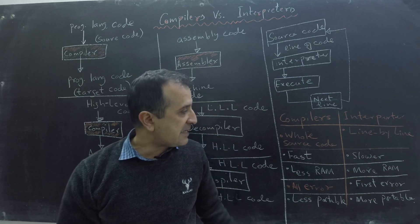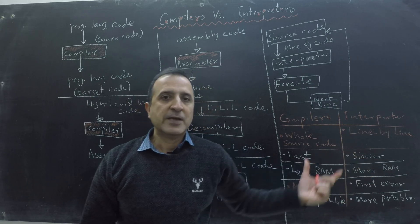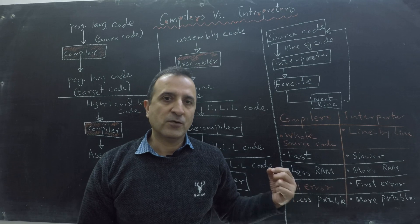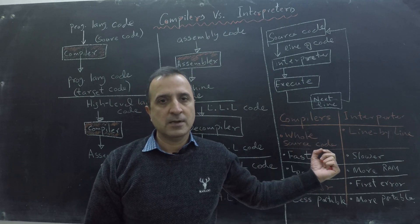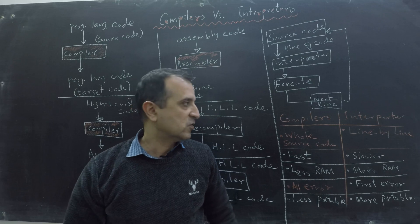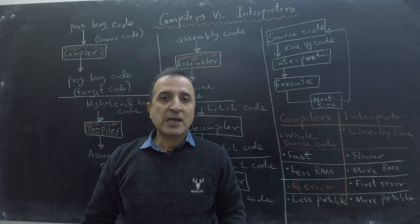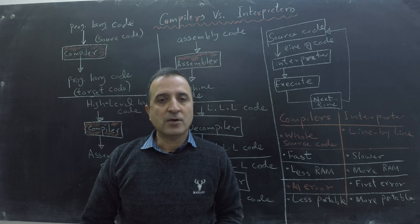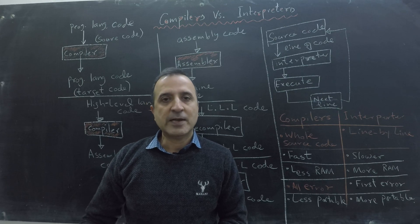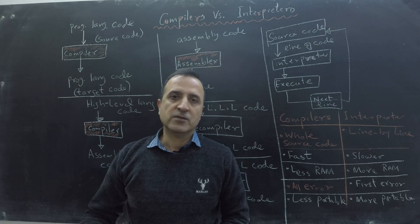These are the key differences between compilers and interpreters. For cases where you have a device with less RAM or you want your program to run faster, you must use a compiler. In contrast, when portability across different devices is required, you should prefer an interpreter. However, since interpreters are much slower, people have developed a new program known as a just-in-time compiler, which has some benefits of both interpreters and compilers. We will discuss just-in-time compilers in the next video.